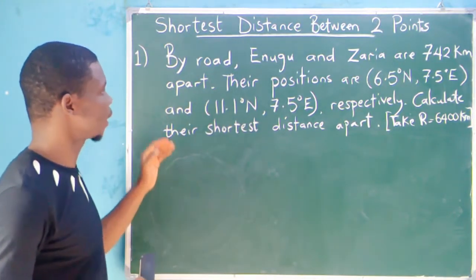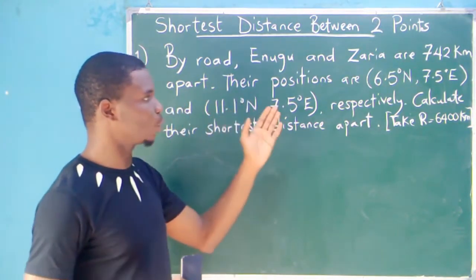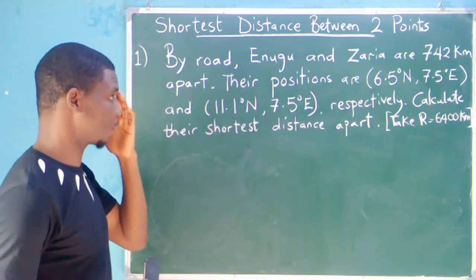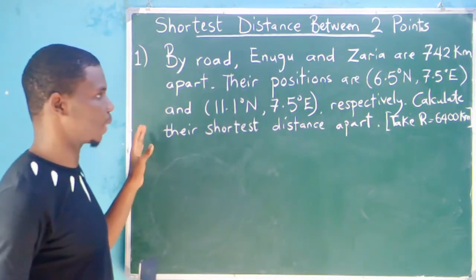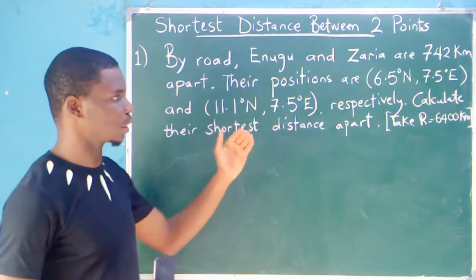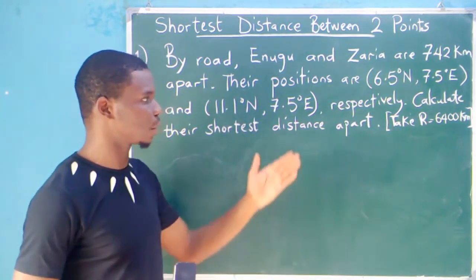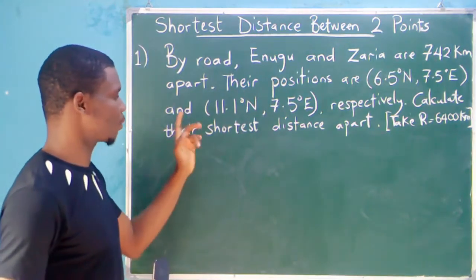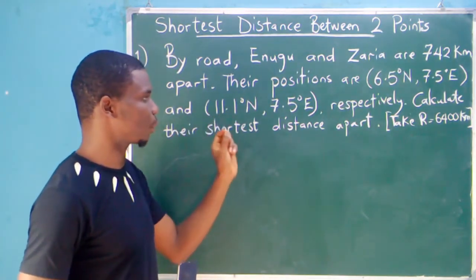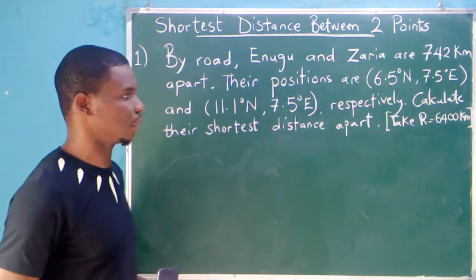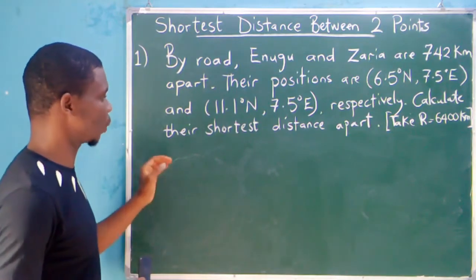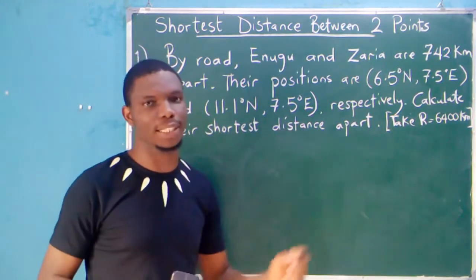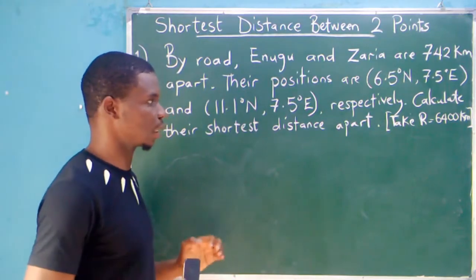It says: by road, Enugu and Zaria are 442 kilometers apart. Their positions are 6.5 degrees north, 7.5 degrees east and 11.1 degrees north, 7.5 degrees east respectively. Calculate their shortest distance apart.